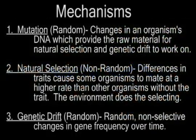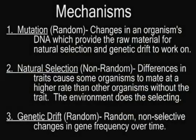The main mechanisms driving evolution are mutations, natural selection, and genetic drift. Random mutations provide the raw information necessary for the other mechanisms to work upon. Natural selection is, by definition, a non-random process whereby the environment favors one trait leading to its accumulation in the population. It is precisely for this reason that evolution is not a blind random process, because one of its main mechanisms is, by definition, non-random.